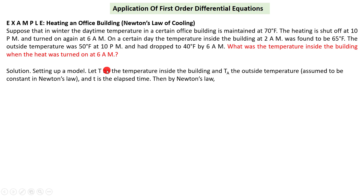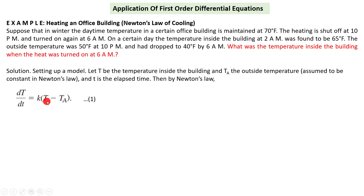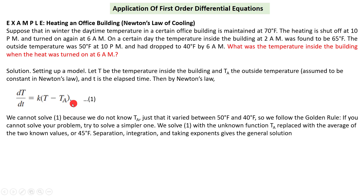First we have to set up the model. Let capital T be the temperature inside the building, and T_a the outside temperature, assumed constant in Newton's Law, and t is the elapsed time. Then by Newton's Law, the time rate of change of temperature is proportional to the difference between the temperature of the body and the temperature of the surrounding area — in this example, the temperature outside.